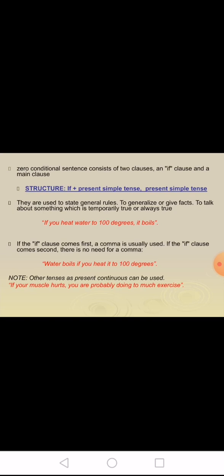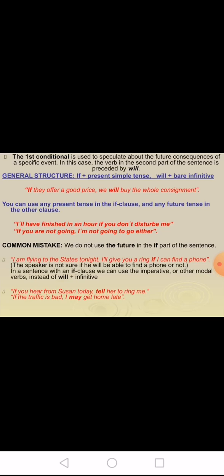First conditional: the first conditional is used to speculate about the future consequences of a specific event. In this case, the verb in the second part of the sentence is preceded by will. Structure: if plus present simple tense, the result is will plus infinitive verb. For example: if they offer a good price, we will buy the whole contract.